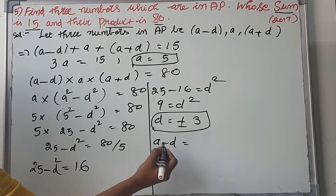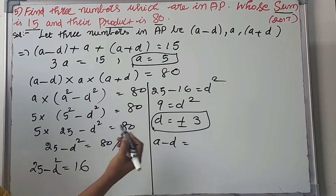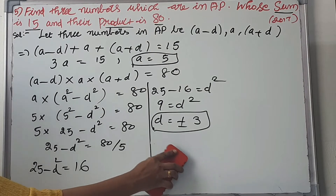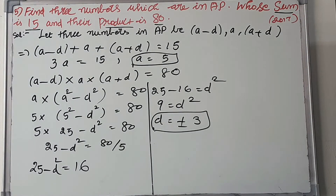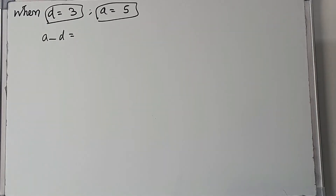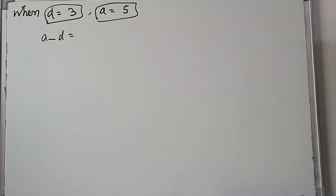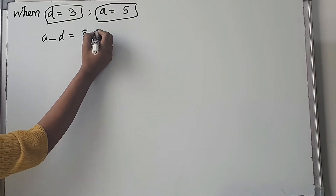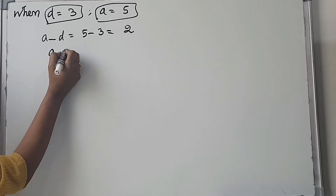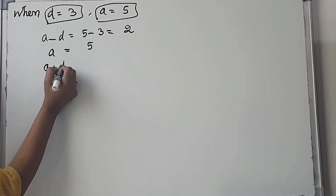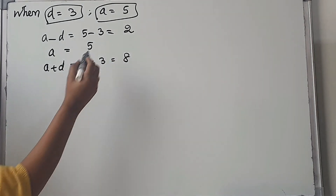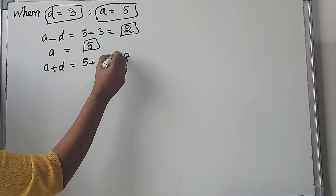Solving for D, we get D squared equals 9, so D equals plus 3 or minus 3. For D equals plus 3: A minus D is 5 minus 3 equals 2, A is 5, and A plus D is 5 plus 3 equals 8. So the three numbers are 2, 5, 8.